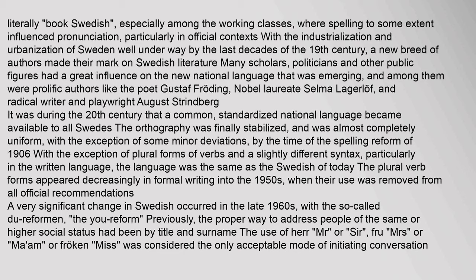Many scholars, politicians and other public figures had a great influence on the new national language that was emerging, among them prolific authors like the poet Gustaf Fröding, Nobel laureate Selma Lagerlöf, and radical writer and playwright August Strindberg. It was during the 20th century that a common, standardized national language became available to all Swedes. The orthography was finally stabilized and was almost completely uniform by the time of the spelling reform of 1906. With the exception of plural forms of verbs and a slightly different syntax particularly in the written language, the language was the same as the Swedish of today. The plural verb forms appeared decreasingly in formal writing into the 1950s, when their use was removed from all official recommendations.